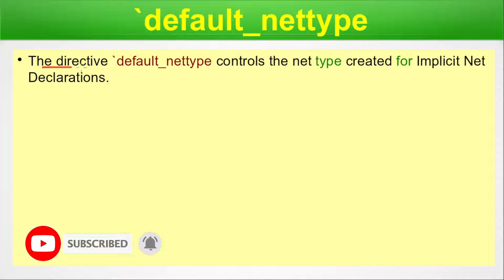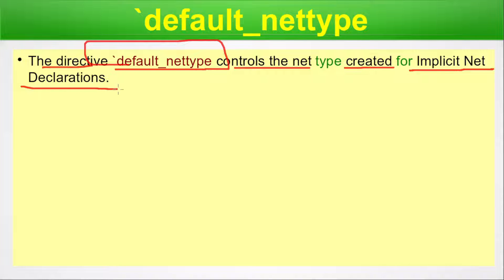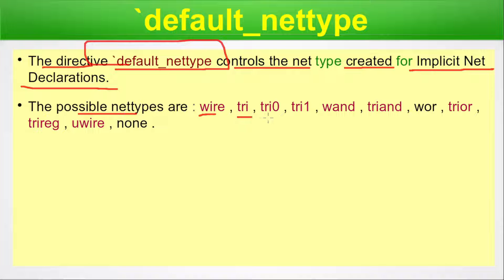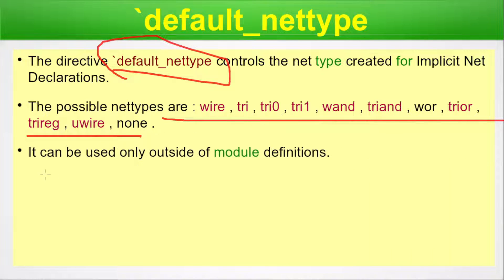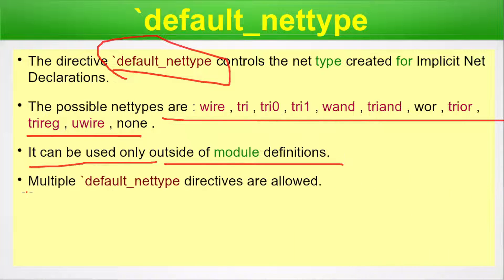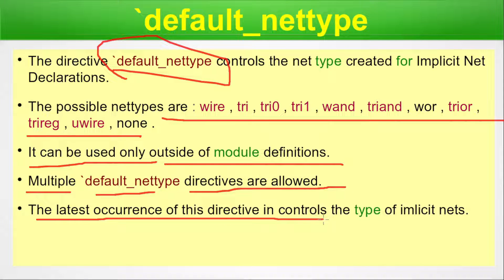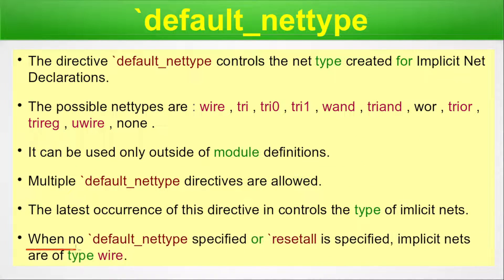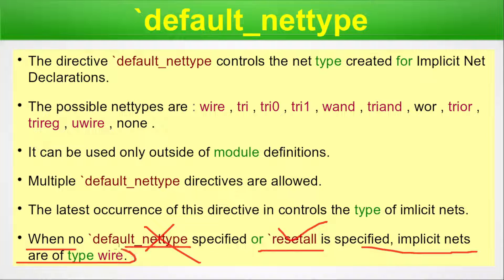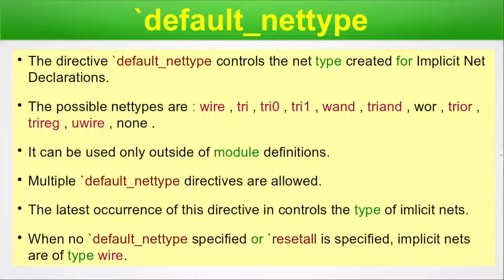Default net type: the default net type directive controls the type of nets created for implicit net declarations. The possible net types are wire, tri, tri0, tri1, wand, triand, wor, or, trior, trireg, wire, and none. This directive can only be used outside of module definitions. Multiple default net type directives are allowed, and the latest occurrence controls the type of implicit net — previous ones are inactive. When no default net type is specified, or when reset all is specified, implicit nets are of type wire.